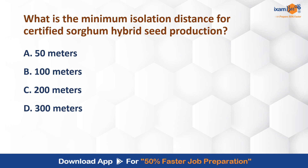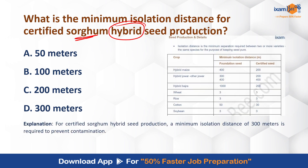What is the minimum isolation distance for certified hybrid seed production? The isolation distance is different for self-pollinated and cross-pollinated crops. For cross-pollinated crops generally it is 800 meters, but for often cross-pollinated crops it is 200 meters. For hybrid seed production in the certified seed category, the isolation distance is 200 meters.